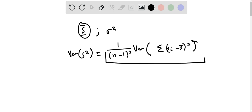Now if we simplify this, what we would get is var of s squared. This is going to be equal to 2 sigma raised to the power of 4 divided by n minus 1.